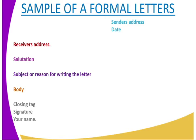In a formal letter, the sender's address and date appear on the right side. On the left side, we have the receiver's address, salutation, subject or reason for writing the letter, and then the body. Formal letters are official letters sent to companies, schools, or institutions when looking for a vacancy or a job. On the right side is the sender's address; on the left side is the receiver's address, salutation, subject or reason for writing, and in the body, include the reason why you are writing.